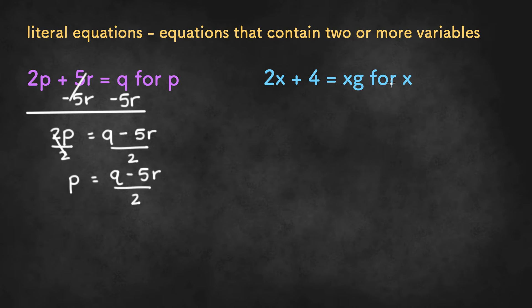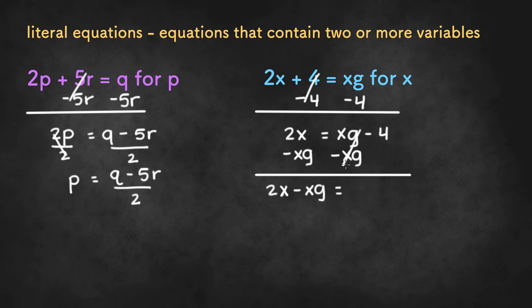In the next example, we have to isolate X. We can first subtract 4 from both sides to get 2X equals XG minus 4. Now, we have to move the X back over XG to the left-hand side. We can subtract XG from both sides to get 2X minus XG equals negative 4.